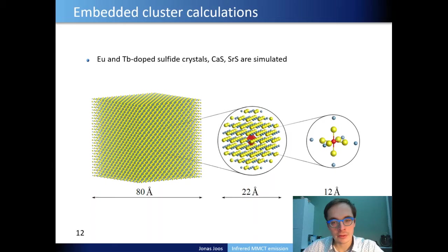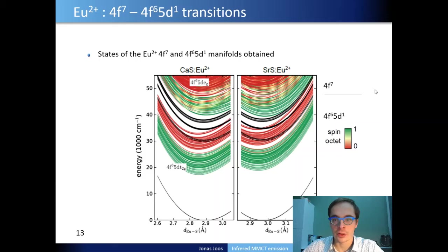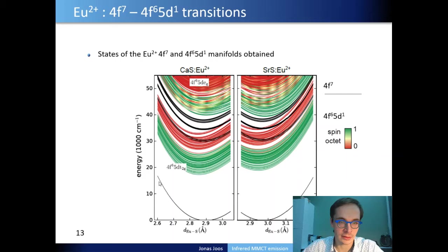To better understand the origin of this broadband luminescence, we performed first principles calculations. We used embedded cluster calculations to model the lanthanides in their crystalline hosts, and multi-configurational calculations that account for both static and dynamic electron correlation at a high level, including relativistic effects and spin-orbit coupling via the Douglas-Kroll-Hess Hamiltonian. We performed calculations on individual Europium 2+ ions in both host crystals — calcium sulfide where we find infrared emission, and strontium sulfide where we do not.